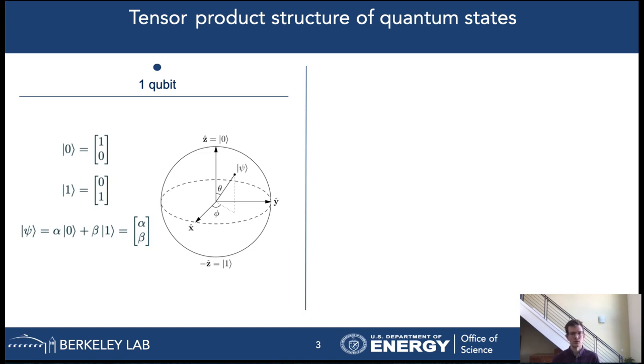However, a qubit can be infinitely many more states besides the two computational basis states and this is fundamentally different from how a classical computer works. It can be in any properly normalized superposition of ket0 and ket1. The squares of the amplitudes of the superposition, alpha and beta, are the probabilities for the respective outcomes after a measurement.